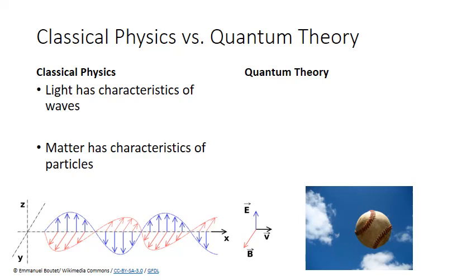In classical physics, we consider that light and matter behave in completely distinct ways. Light is energy, and it has the characteristics of waves. It travels as a wave of oscillating electric and magnetic fields. Those waves interact with other waves and with matter in unique ways — they can bend around objects, and when waves meet each other, they can combine together to form new distinct wave patterns.